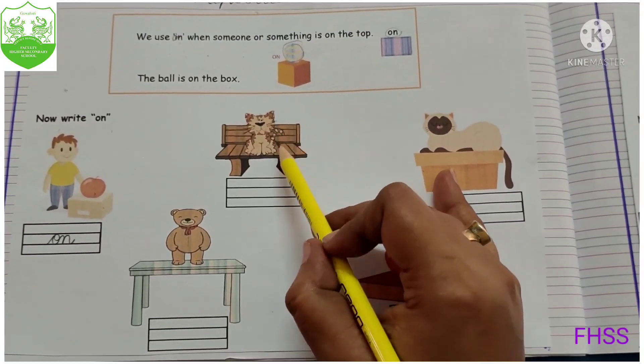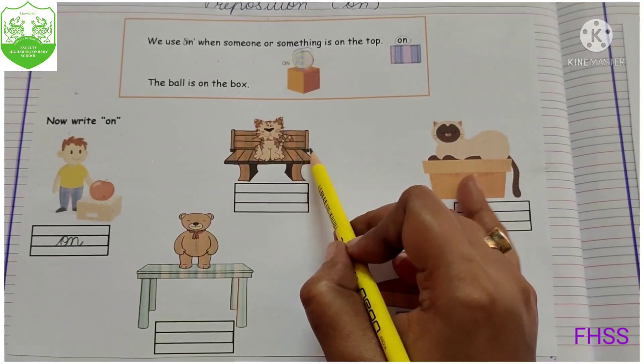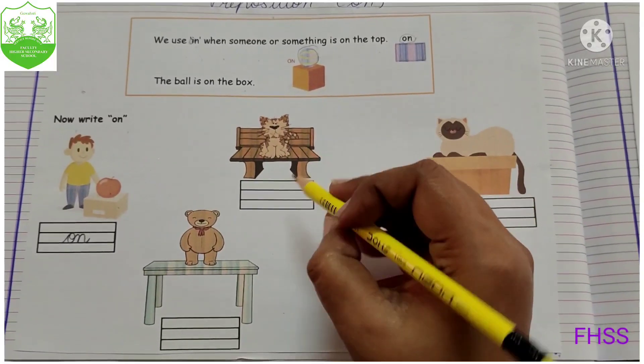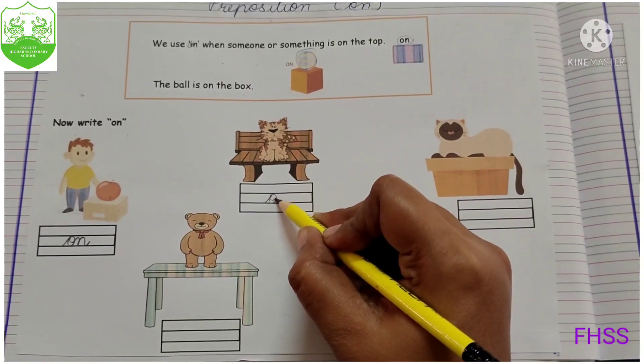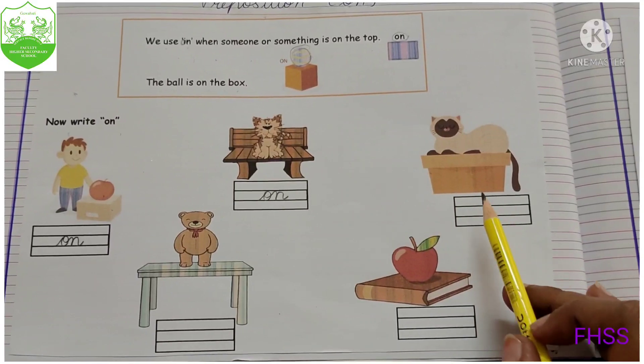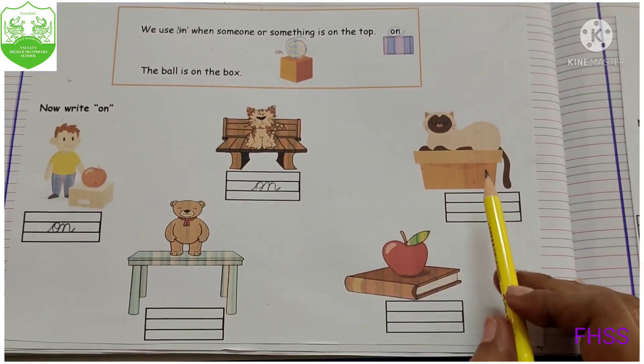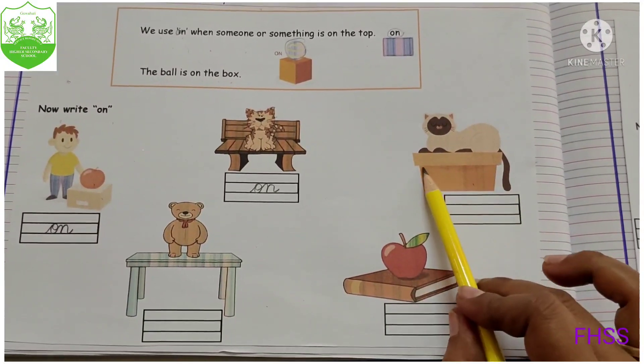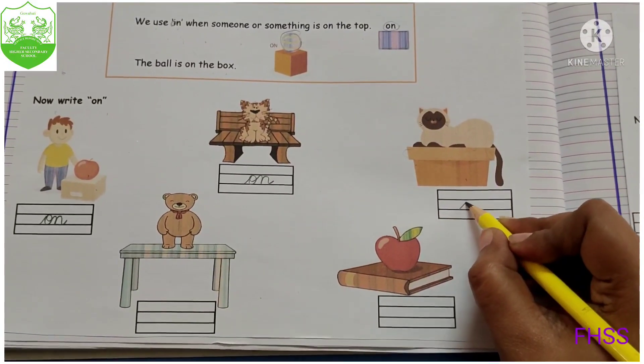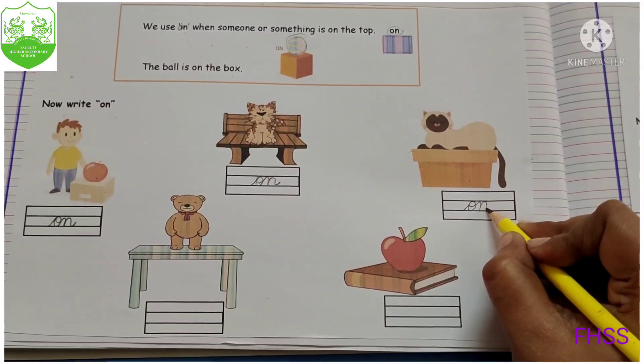So like this, look at the next picture. Where is the cat? The cat is sitting on the top of the bench. So we will write here also on. So like this, look at the next one. The cat is on the top of the box. So we will write here also on.